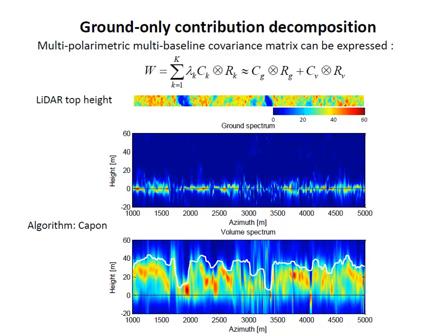Even with steep slopes, we still perform phase calibration to identify the ground contribution. Using singular value decomposition keeping the maximum eigenvalue, we associate ground and canopy contributions based on the polarimetric and interferometric coherency matrices. The LIDAR top-height measurements and the spectra of the ground and volume show that the ground contribution is locked to the ground level.